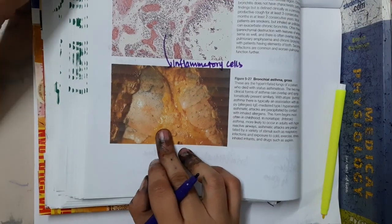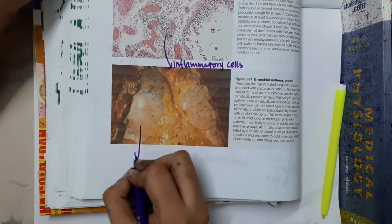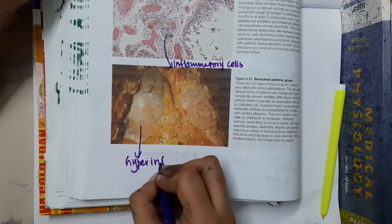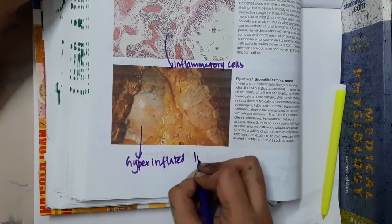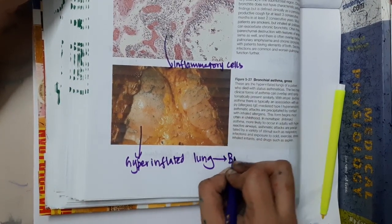This is the picture of bronchial asthma. These are hyperinflated lungs in the patient, which are seen in bronchial asthma.